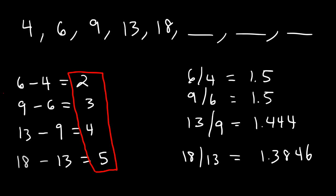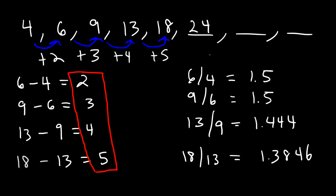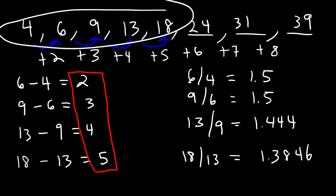To go from 4 to 6 we need to add 2. To go from 6 to 9 we need to add 3. To go from 9 to 13 we add 4. And to go from 13 to 18 we need to add 5. So therefore the next number has to be 18 plus 6, which is 24. And then after that we need to add 7. 24 plus 7 is 31. And then we need to add 8. 31 plus 8 is 39. That's how we could define the next set of numbers.